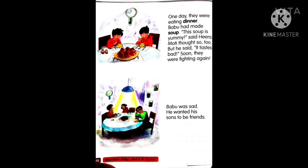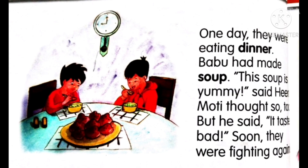Now let us move to the next page, page number 72. Let us read the first paragraph. One day they were eating dinner. Babu had made soup. 'This soup is yummy,' said Hira. Moti thought so too, but he said it tastes bad. Soon they were fighting again.